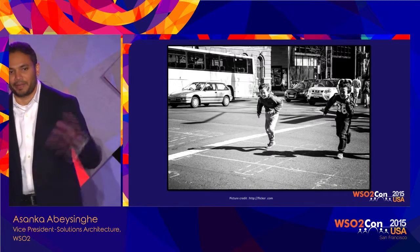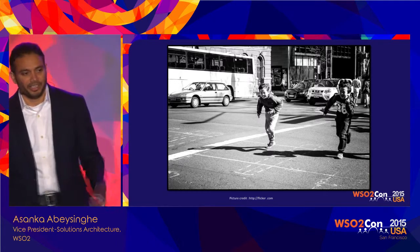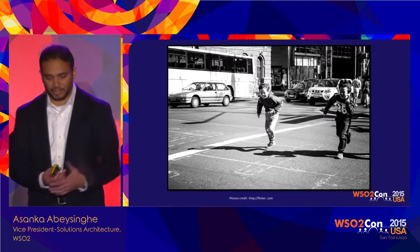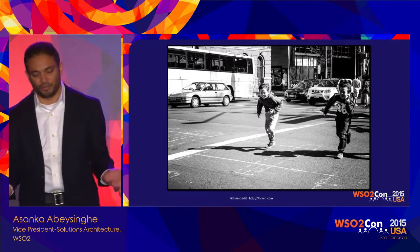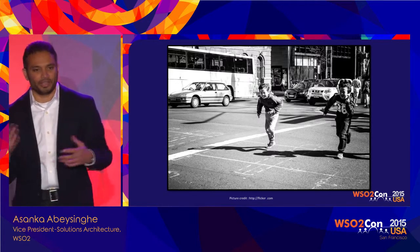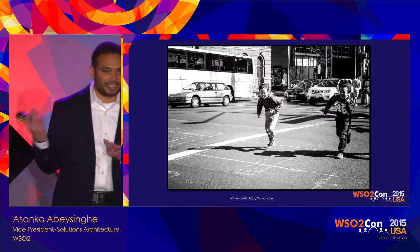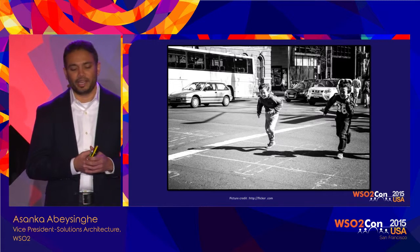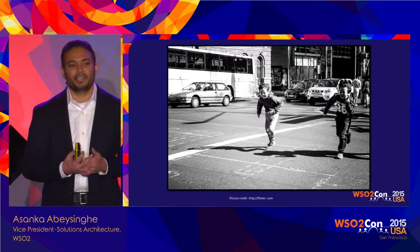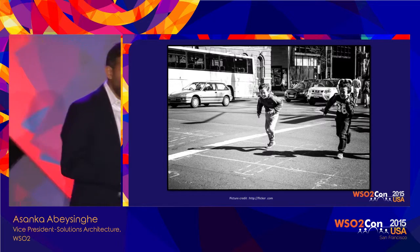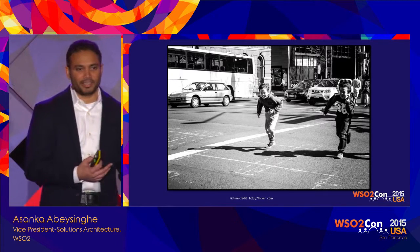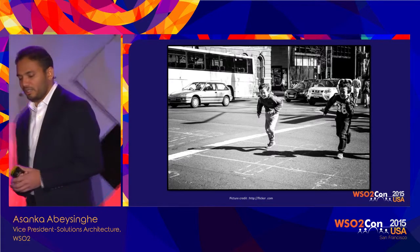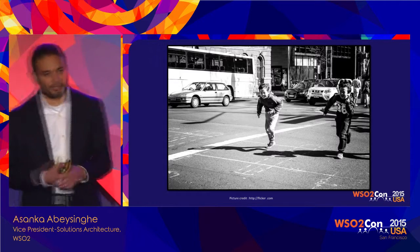A real-world example of a pattern is how to cross the road. If there's a traffic signal, we wait for the pedestrian sign and then cross. If there's no signal, we look right, left, right, and then cross. Pedestrians and drivers both know this pattern, and associated with it are zebra crossings, various signals, and speed limits — many things associated with that pattern.